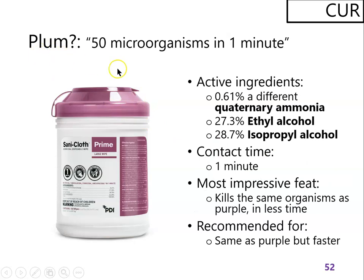The plum product brags 50 microorganisms in one minute. It kills the same organisms as purple — not endospores like orange/bleach — and contains a high concentration of quaternary ammonia in a mix of ethyl and isopropyl alcohols. That combination allows it to kill 50 different microorganisms in just one minute. Think of it as the purple product but with a shorter contact time.